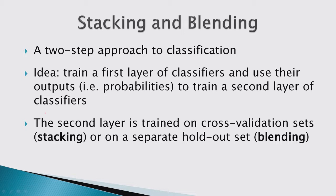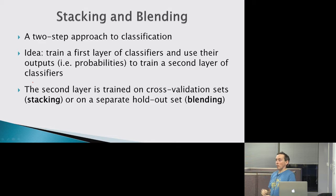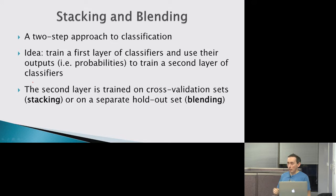For stacking, you can do cross-validation — divide your set into n subsets, train on n minus one subsets and predict on the nth, then choose another subset and repeat. For example, divide into five subsets, cycling through them.